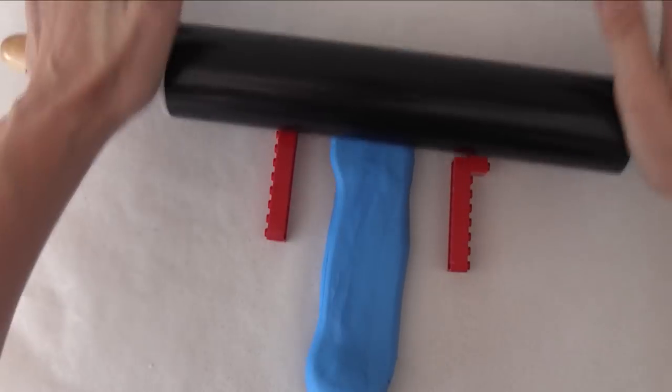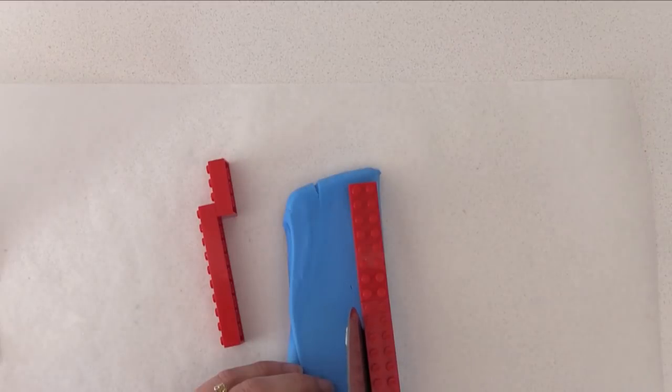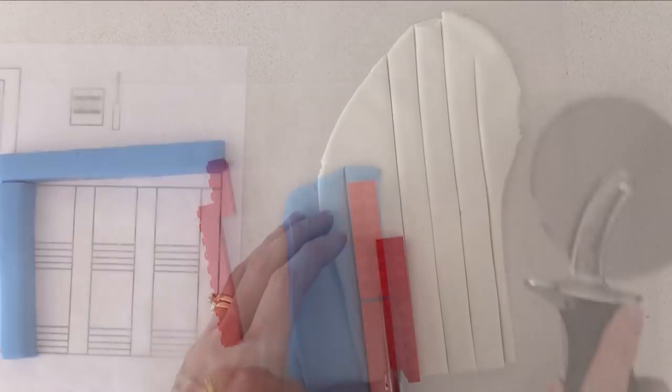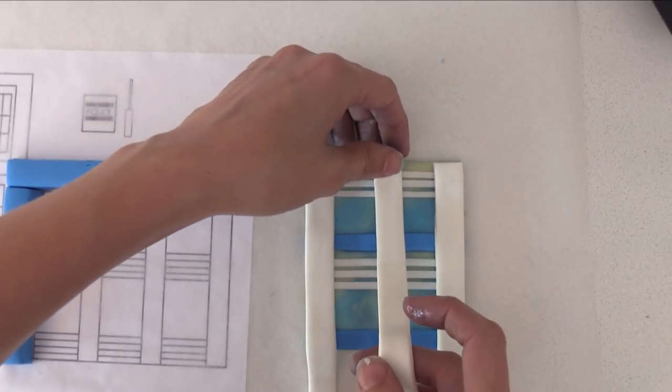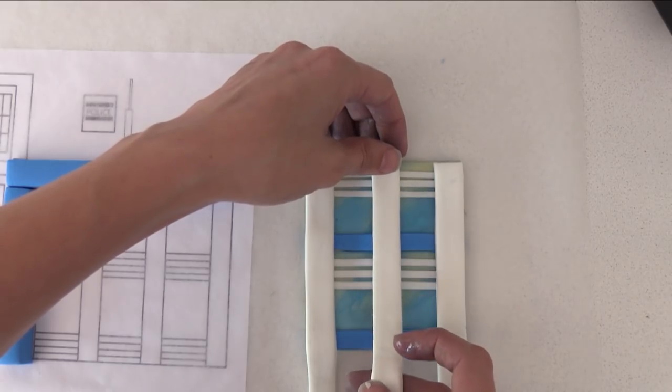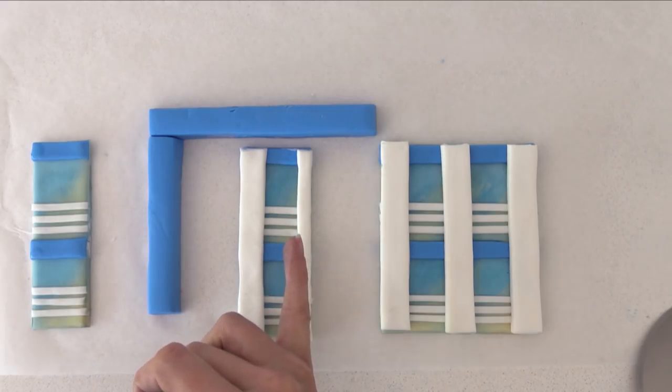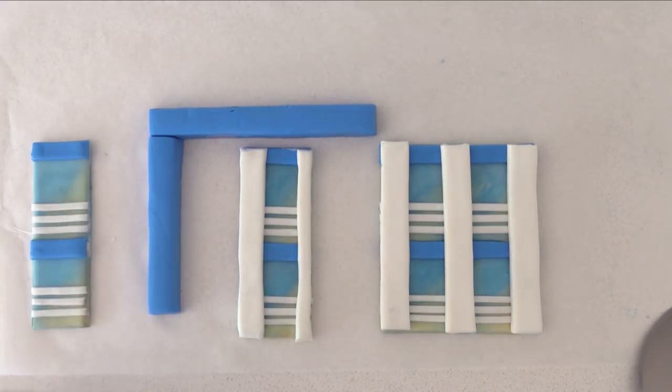Roll out some blue using the lego on the sides to guide you how thick it needs to be. Then cut some strips the width of a two block. Roll out some thin strips of white and add them to the top of the front fondant police station part. To the other smaller front bit, add a strip to one side and a half a strip to the other, and leave the last one plain.